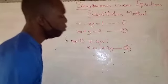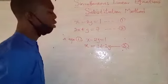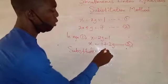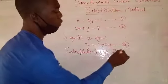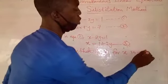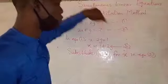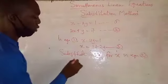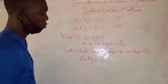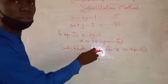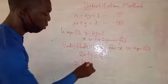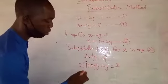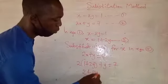Having obtained equation three, we will now substitute using the substitution method. We substitute 1 plus 2y for x in equation two. We are not going to use equation one because we used equation one to derive equation three, so we cannot substitute back into equation one. Equation two says 2x plus y equals 7, and x is replaced by 1 plus 2y, giving us 2 brackets (1 plus 2y) plus y equals 7.